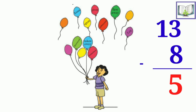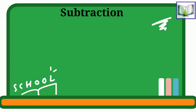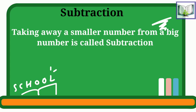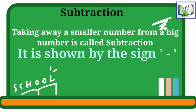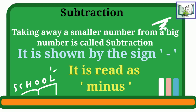Before solving more examples of subtraction, first we will see the properties of subtraction. Subtraction: first point, taking away a smaller number from a big number. Two point, it is shown by the sign minus. Can you see the sign of subtraction?